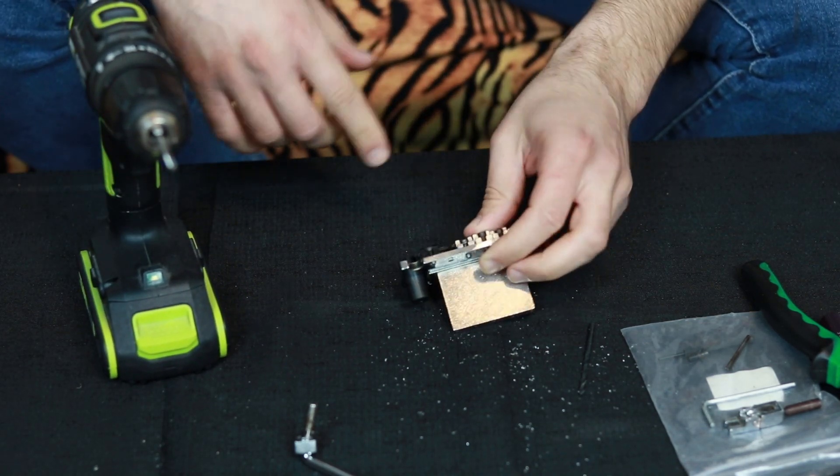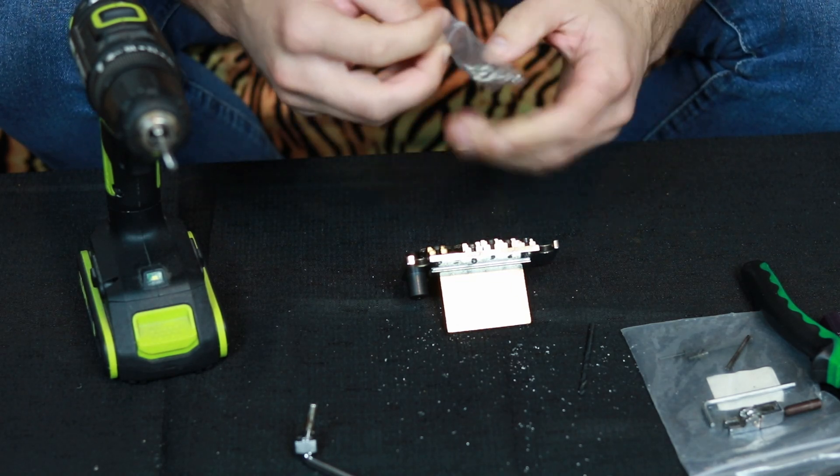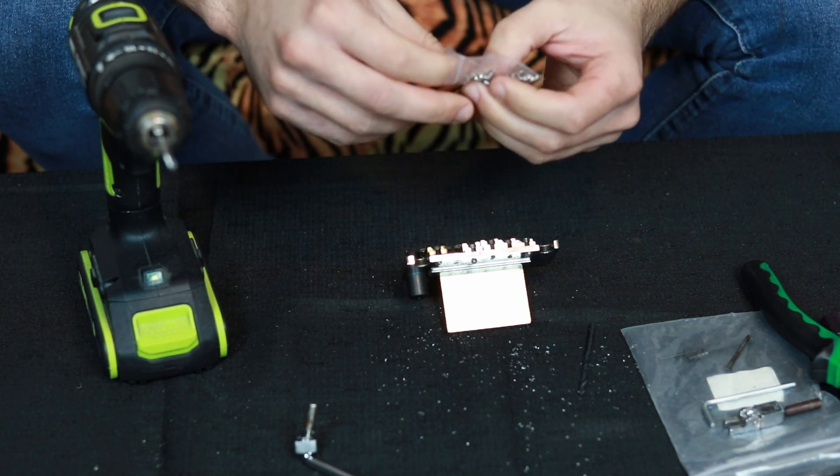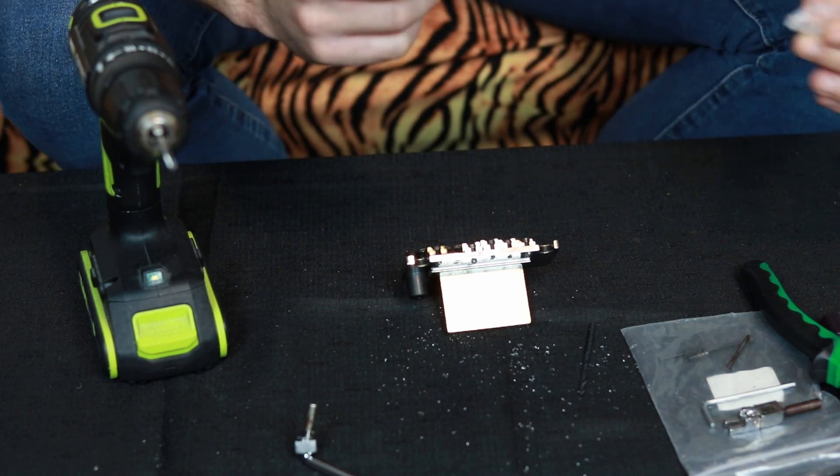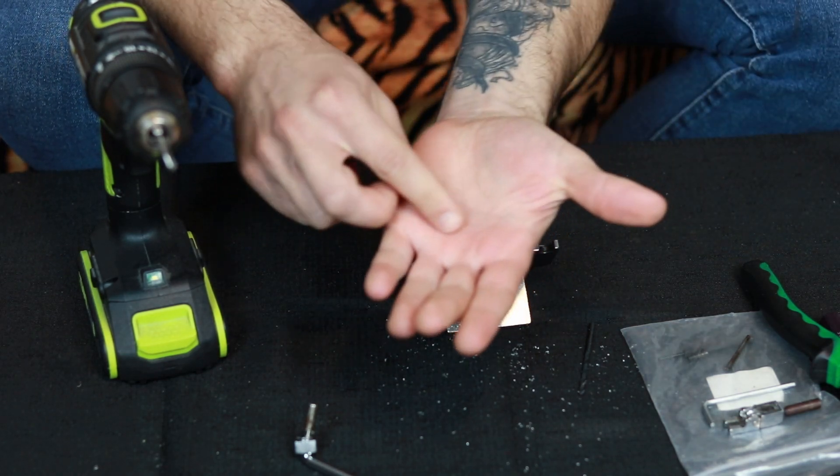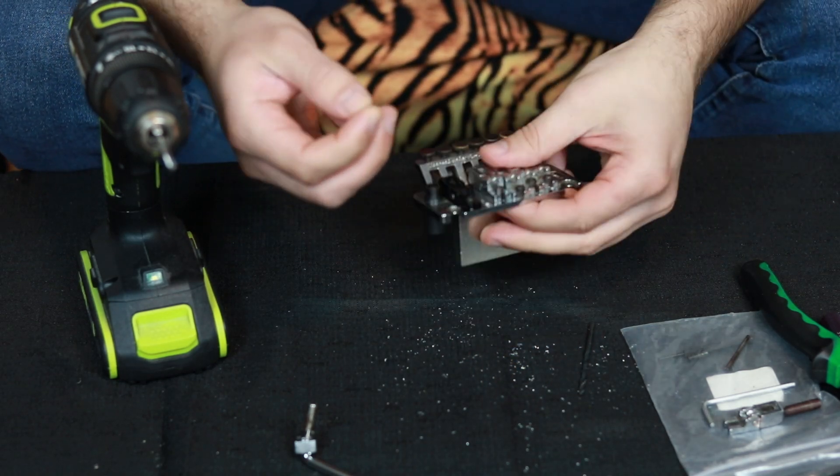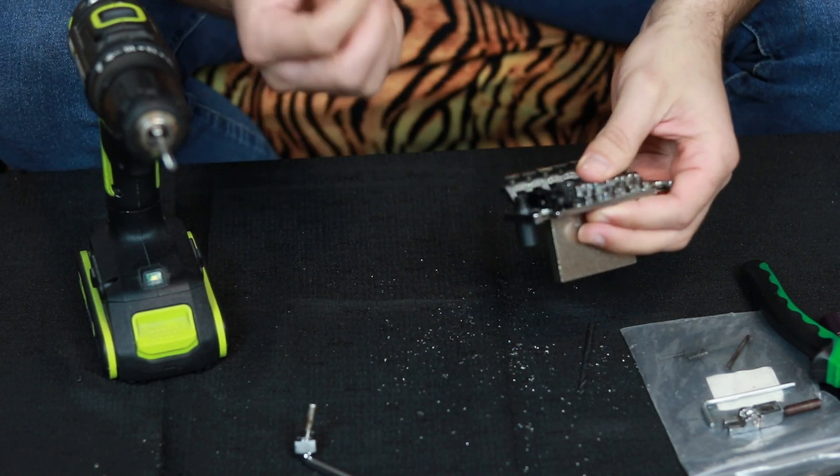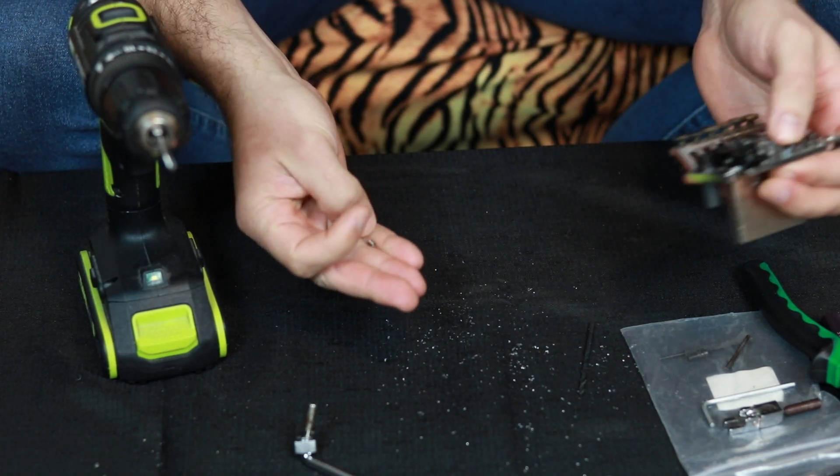And now, delicate part. We're going to take the helicoil. Basically the helicoil is just a coil and it's going to create our new thread. You see it's this tiny coil. Because the hole we made is a little bigger, the helicoil is going to create the new thread and secure it.